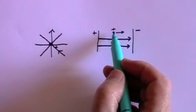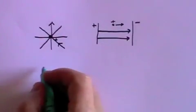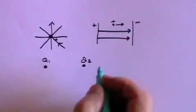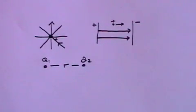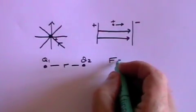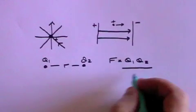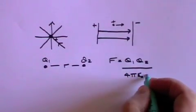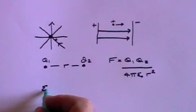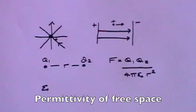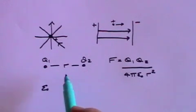If you were to put a negatively charged particle in the field, it would accelerate towards the positive plate. If you take two charges q1 and q2 a distance r apart, then there will be a force acting between them. That force equals q1 times q2 divided by 4 pi epsilon naught r squared, where r is the distance between the charges. Epsilon naught is called the permittivity of free space.